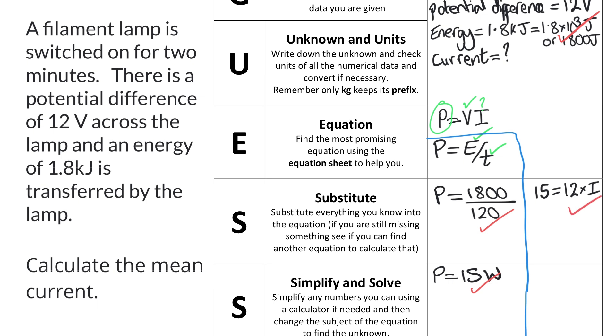Now I need to try and solve this, and I'm told that 12 times the thing that I want is 15, and therefore the thing that I want is going to be the current is equal to 15 divided by 12. And the good news, that will get us another method mark.